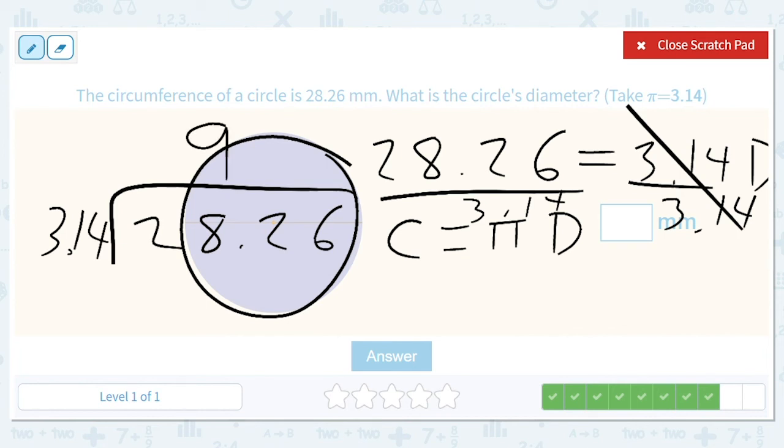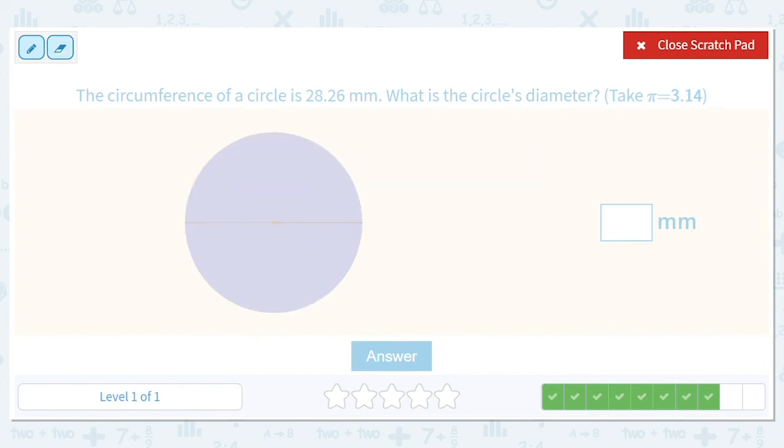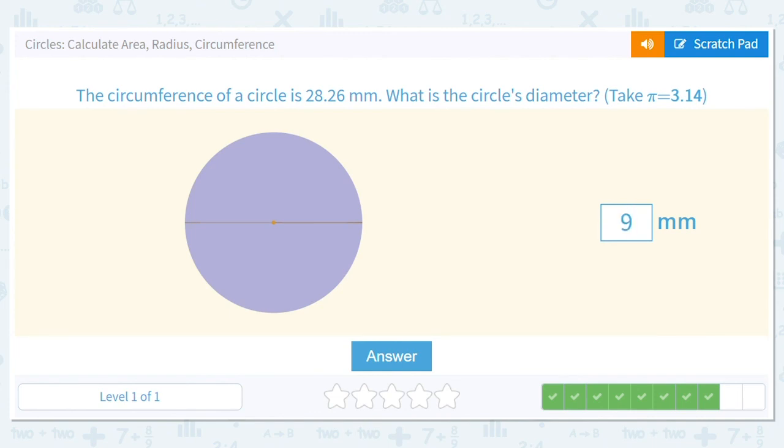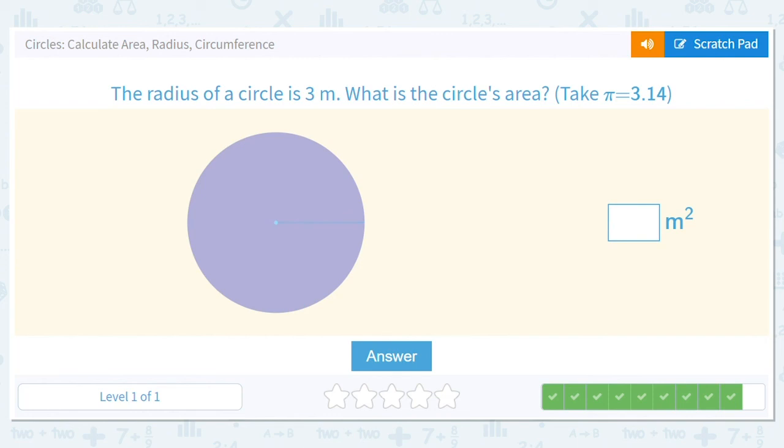9 times 3 is 27. No wait, that's not—28.26, I'm dividing here, 28.26 divided by 9, no, divided by 3.14. Sorry, okay, so this is 9. This will give us 9 times 3.14 will be 27 plus—I mean, it's just going to be 28.26. Yeah, all right, so it's just going to be 9.